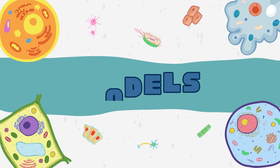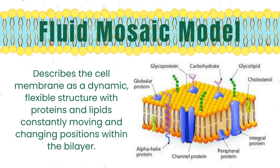There are several models that have been proposed to describe the structure and behavior of the cell membrane over time. The first model is the fluid mosaic model. Imagine the cell membrane as a constantly shifting and flexible structure, like a mosaic made of tiny moving pieces. These moving pieces are proteins and lipids, always changing their positions within the bilayer. This model helps us understand how the membrane can adapt and be flexible, crucial for various cell functions.